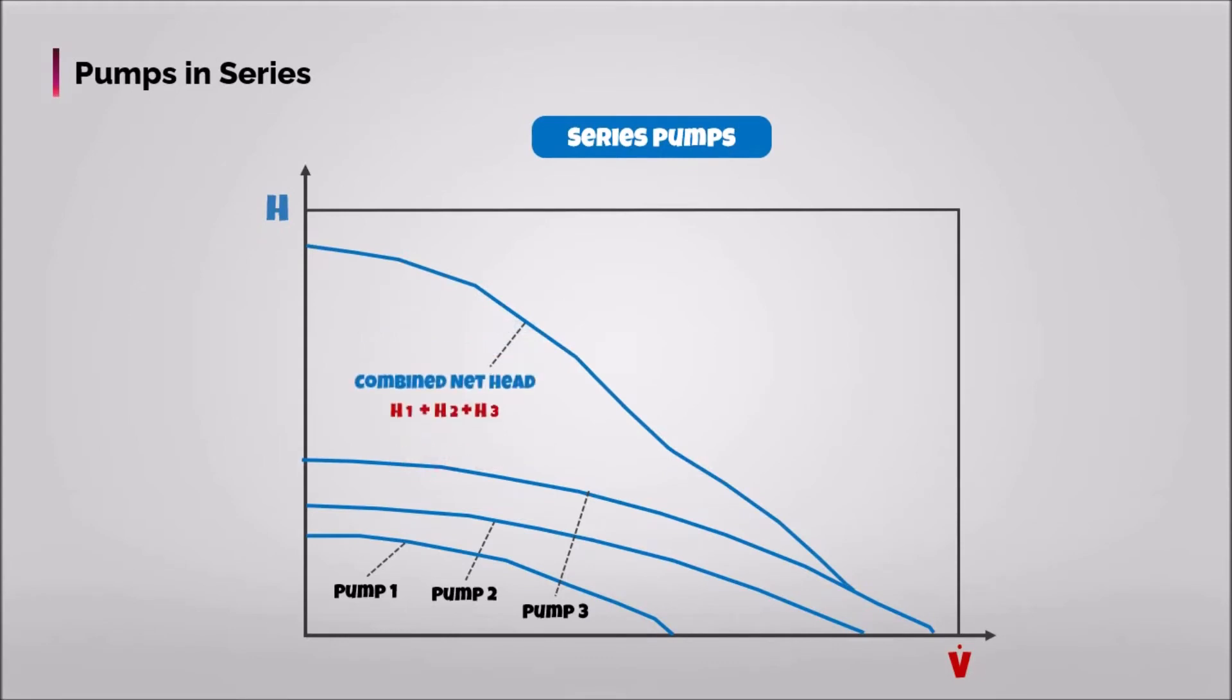However, to avoid pump damage and loss of combined net head, any individual pump should be shut off and bypassed at flow rates larger than the pump's free delivery, as indicated by the vertical dashed red lines.